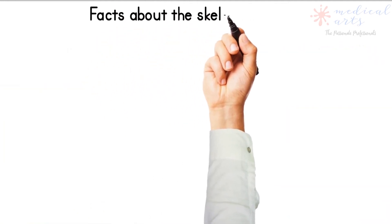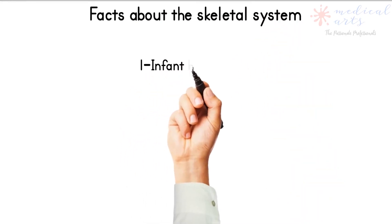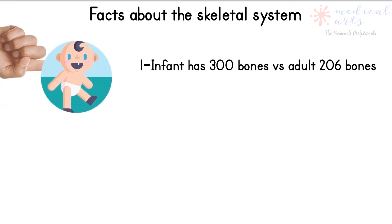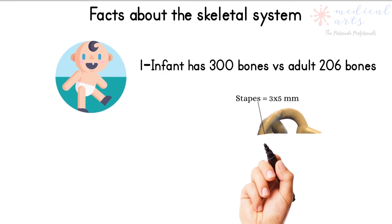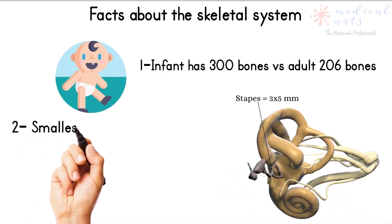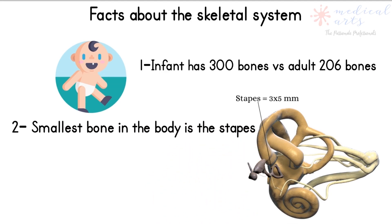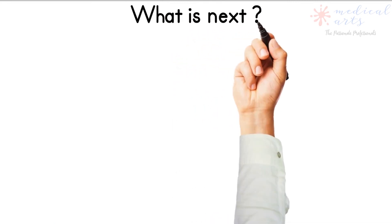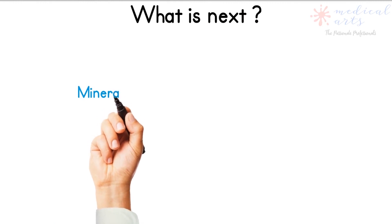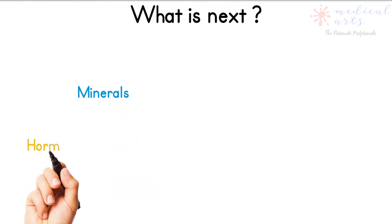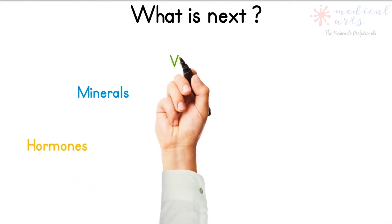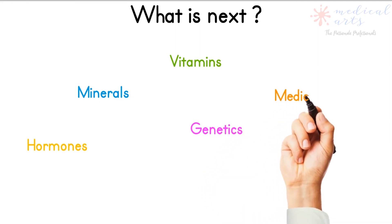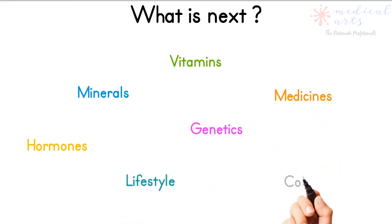Facts about the skeletal system: a newborn has 300 bones in its body, while an adult has only 206 — many bones fuse with growth to form one more prominent bone. The smallest bone in our body is located in the middle ear and is called the stapes. Our next video will discuss information concerning a healthy lifestyle and factors that affect our bones and skeletal system, which may lead to early osteoporosis, stress fractures, and many other preventable diseases. Some of those factors include minerals, hormones, vitamins, genetics, medicines, lifestyle, smoking, and proteins like collagen.